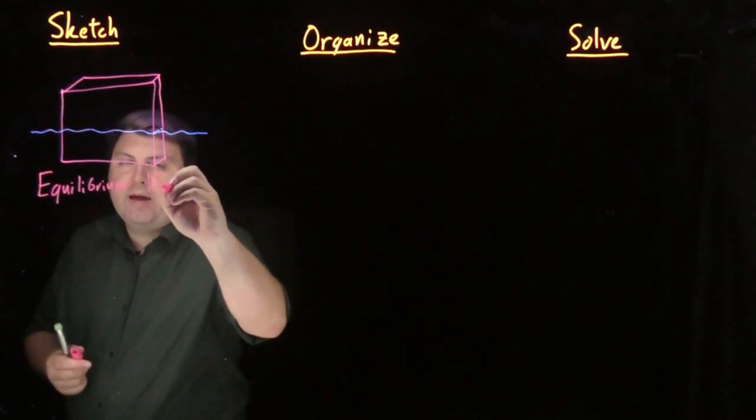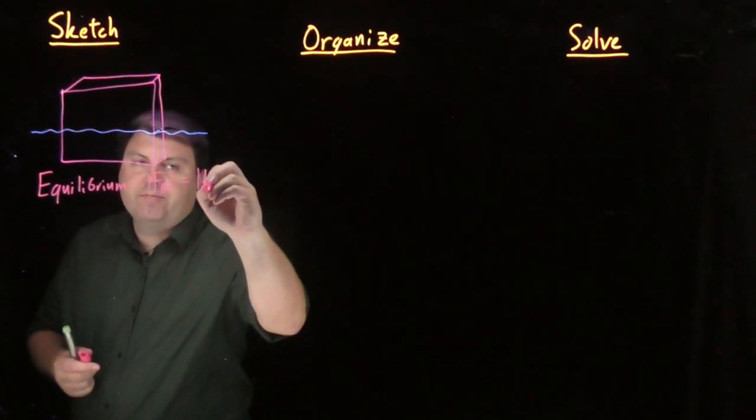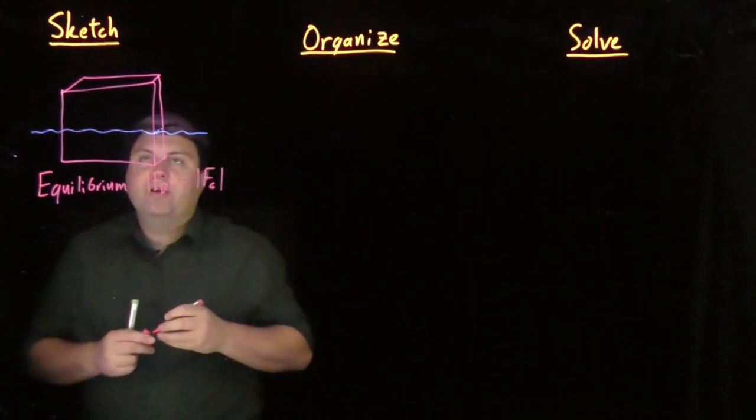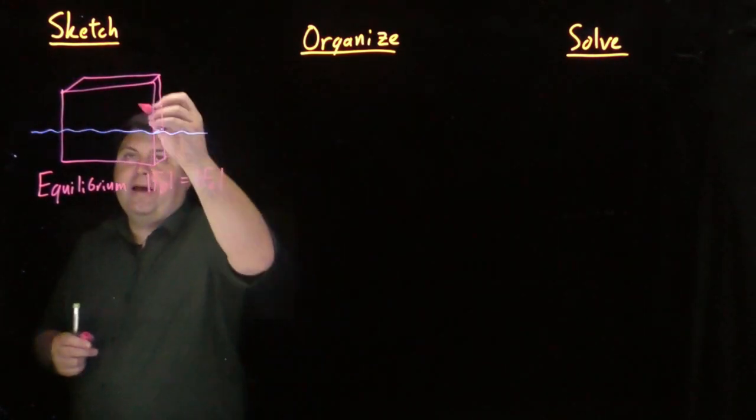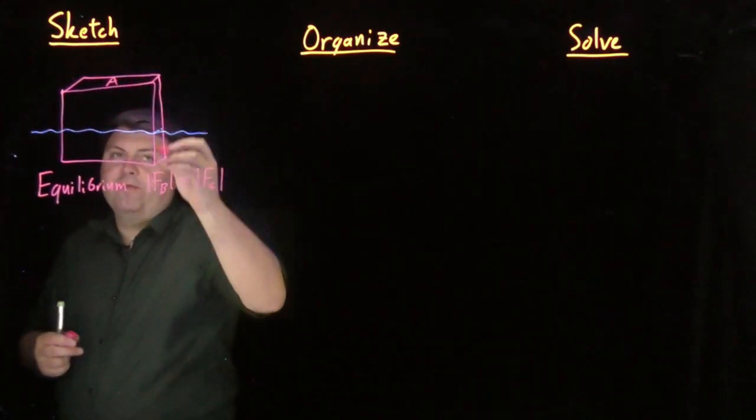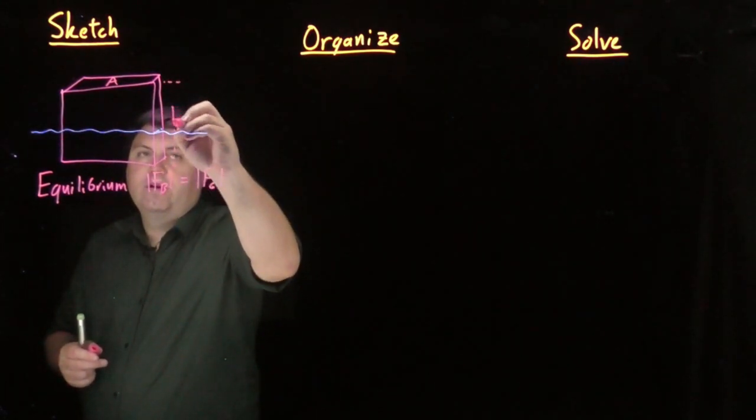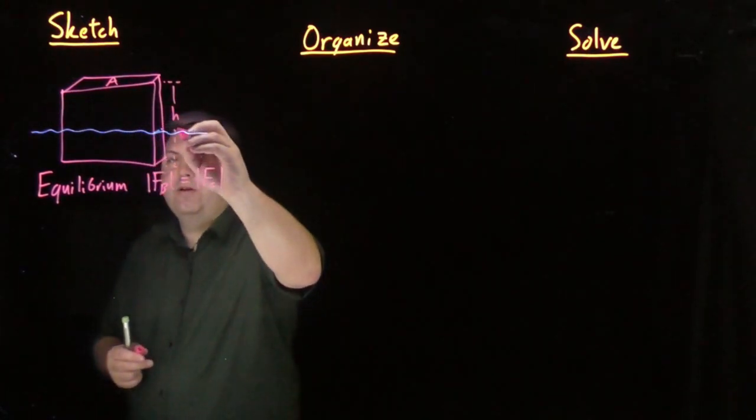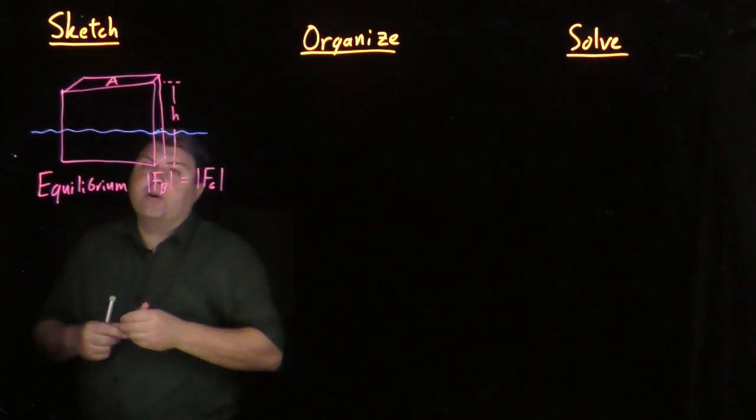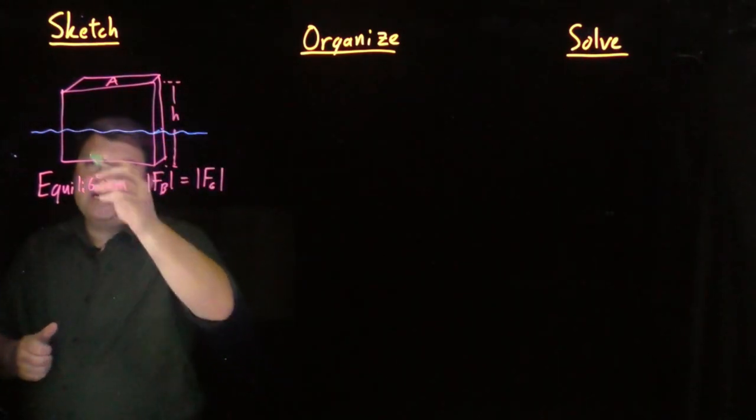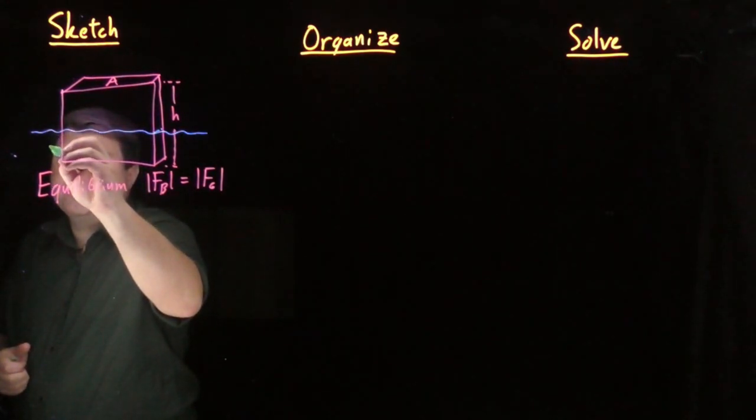Meaning the absolute force of buoyancy is equal to the magnitude of the force of gravity. Our styrofoam has an area A for the top and it has a height h.